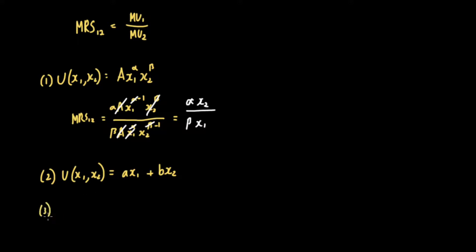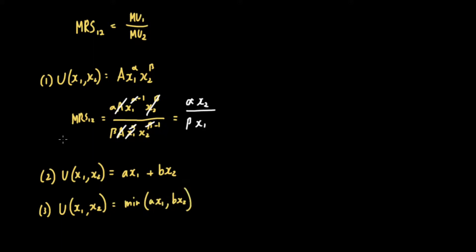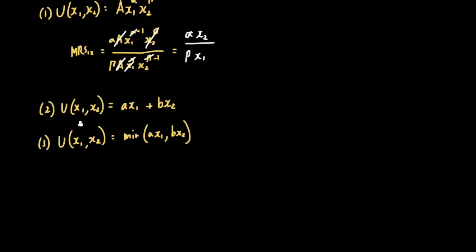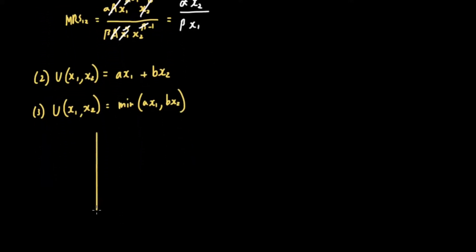In the third case, we have our perfect complements. So u is a function of x sub 1 and x sub 2, and this is equal to the minimum of A times x sub 1 and B times x sub 2. In this case, I think it's easier to approach this graphically, so I'll draw our indifference map here and draw the indifference curve for perfect complements.